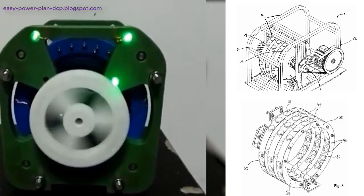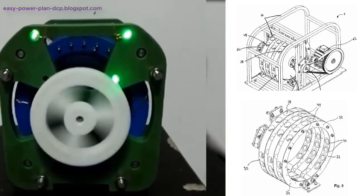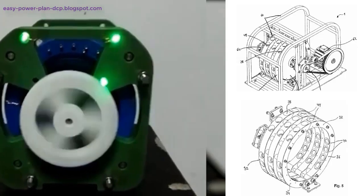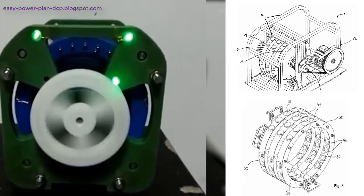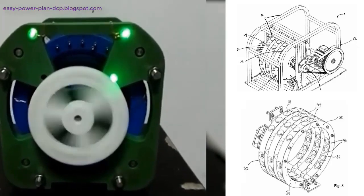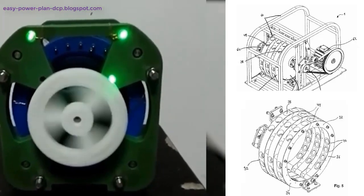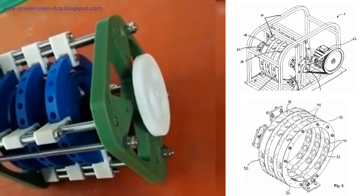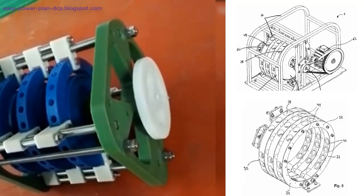Tesla's work on alternating current (AC) generators revolutionized the way electricity is produced and distributed, and he remains a key figure in discussions of free energy. However, it is important to recognize that Tesla's approach to energy generation was fundamentally different from the concept of a permanent magnet motor.